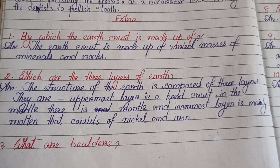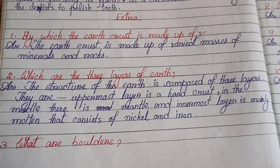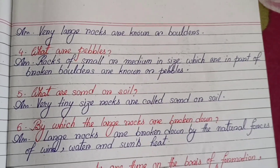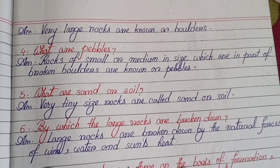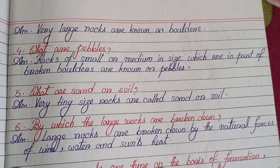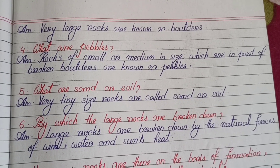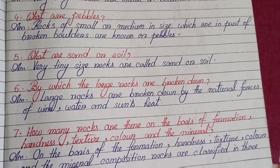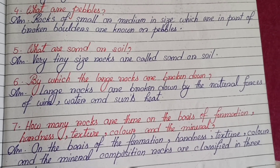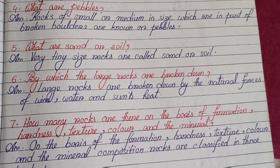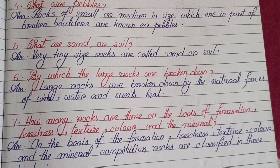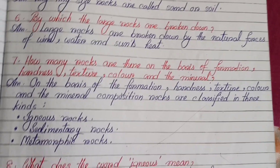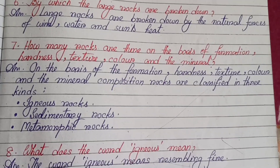Number three: What are boulders? Very large rocks are known as boulders. Number four: What are pebbles? Rocks of small or medium size which are part of broken boulders are known as pebbles. Number five: What are sand or soil? Very tiny size rocks are called sand or soil. By which forces are large rocks broken down? Large rocks are broken down by the natural forces of wind, water and sunlight.